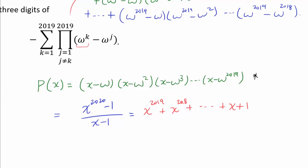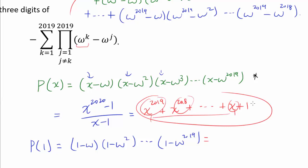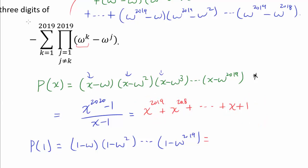There is something interesting, unrelated to our problem but fascinating: look at what p of 1 is. We know p of 1 is 1 minus omega times 1 minus omega squared, all the way to 1 minus omega to the 2019, by plugging 1 into x. But we can also plug 1 into the equivalent form of p of x — when you plug in 1, you are adding 1s exactly 2020 times. So this expression, which looks very complicated, is just 2020. That really illustrates the power of well-chosen polynomials in deriving information about roots of unity.